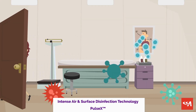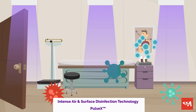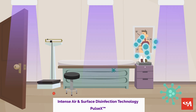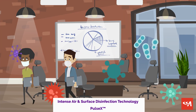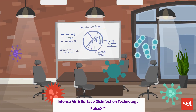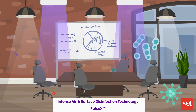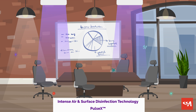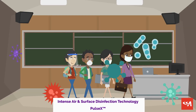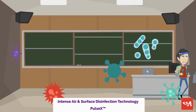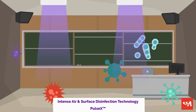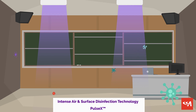Is inactivating pathogens in the air and on surfaces rapidly a priority for you? Pulse X powered by Violet Defense technology could be your solution. This pulsed Xenon UV technology uses a broad spectrum of UVA, UVB, and UVC wavelengths to quickly kill bacteria and inactivate viruses. It is a great unobtrusive alternative to conventional germicidal UV lamps. Remember to keep people out of your spaces while Pulse X is running.